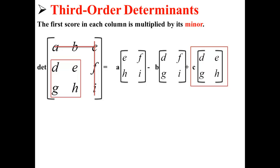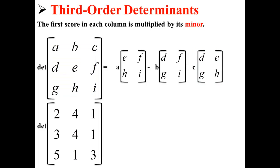That's kind of complicated, so let's actually try a real example. Here, we have a 3 by 3 matrix with elements 2, 4, 1, 3, 4, 1, 5, 1, 3. Let's find its third-order determinant.